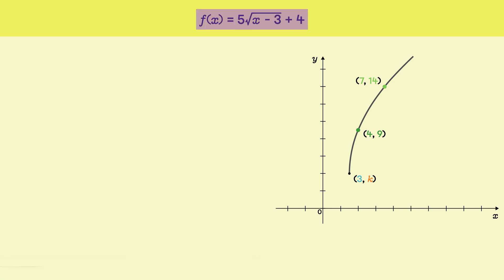So the rule for the function is f of x equals 5 square root of x minus 3 plus 4.